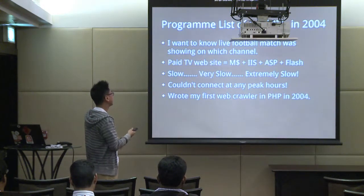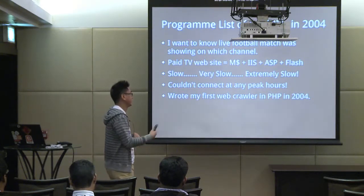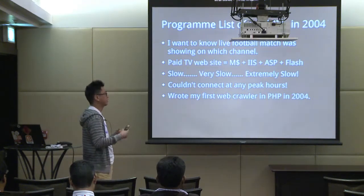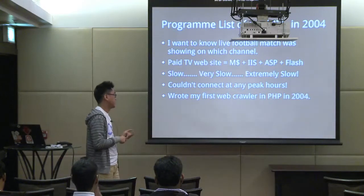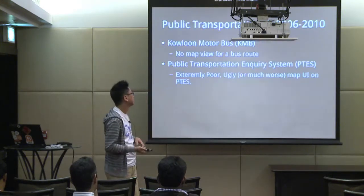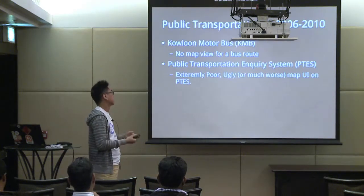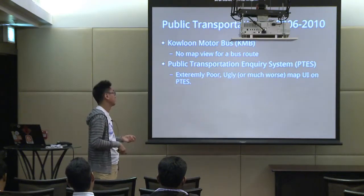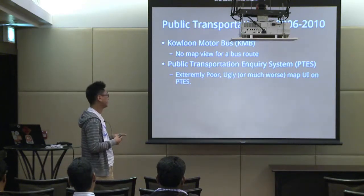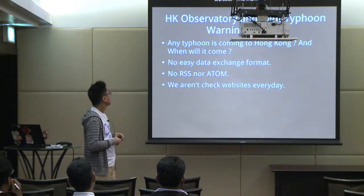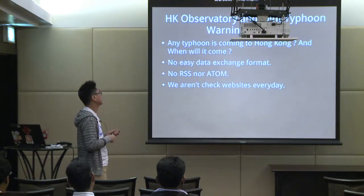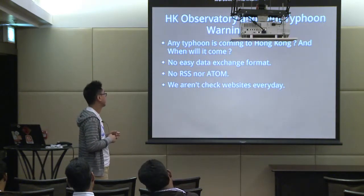For example, Cable TV — many years ago they used Microsoft IIS to run their web server, which was very slow, so data could not be collected at peak hours. That was one of my first scrapers about 10 years ago. I also wrote other scrapers to collect data from bus company websites and government public transportation inquiry systems. We can use this technique to collect more information, such as Taiwan information.